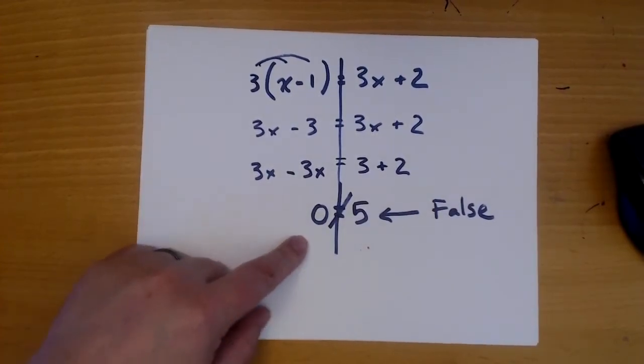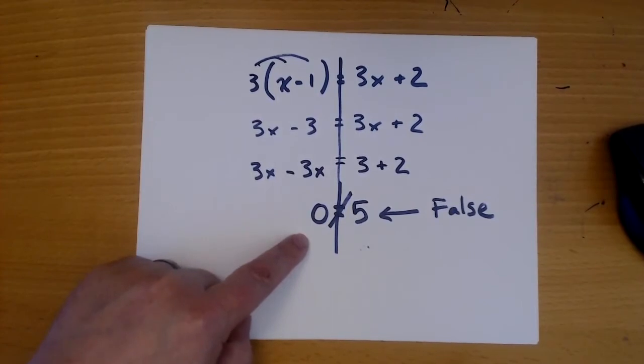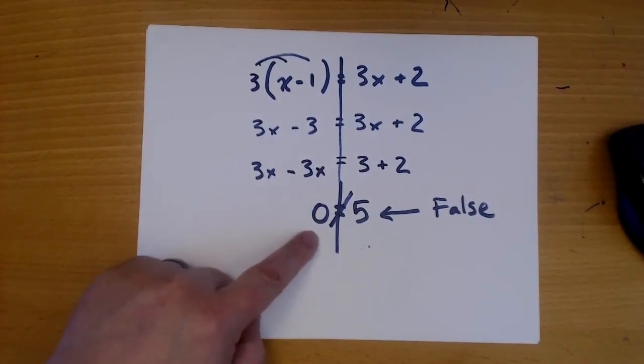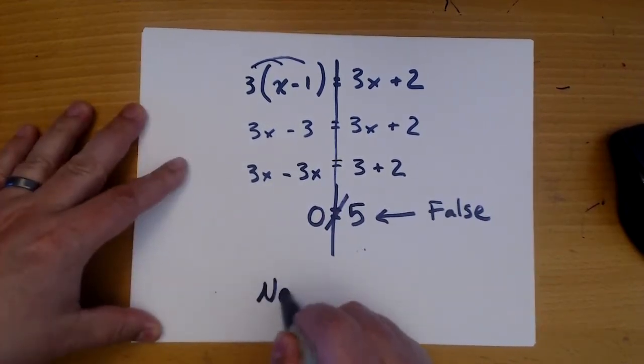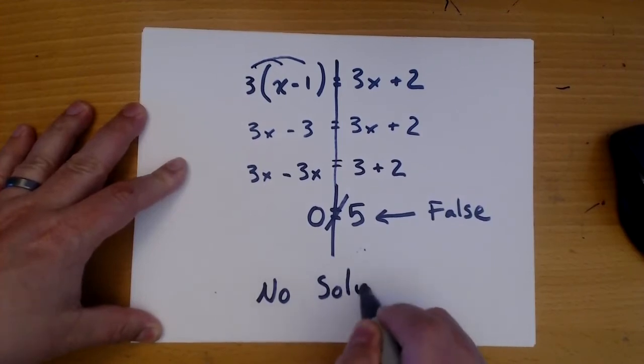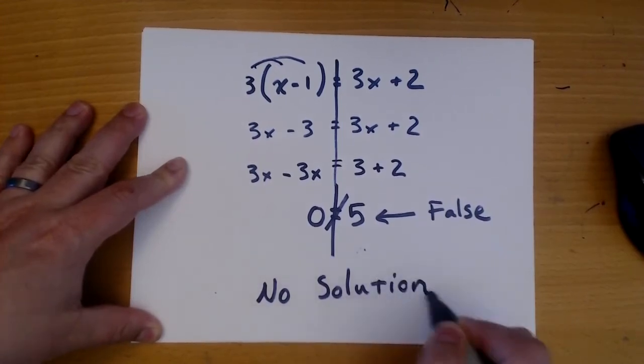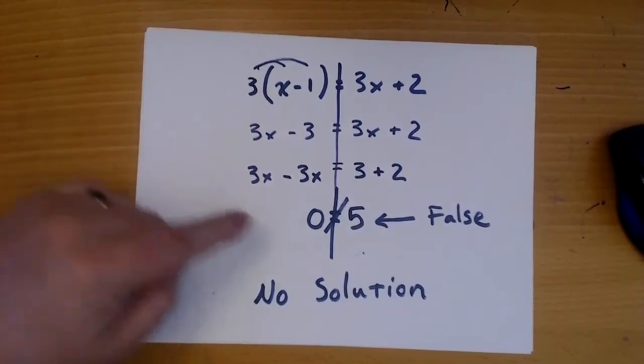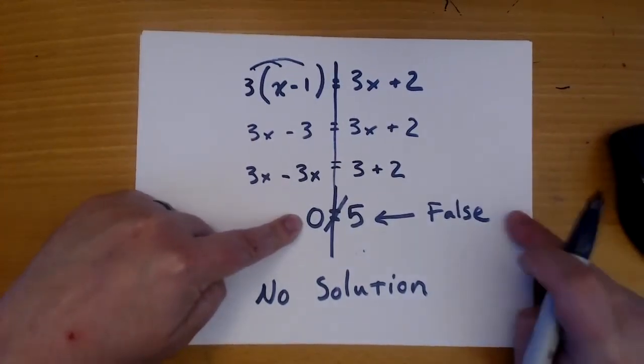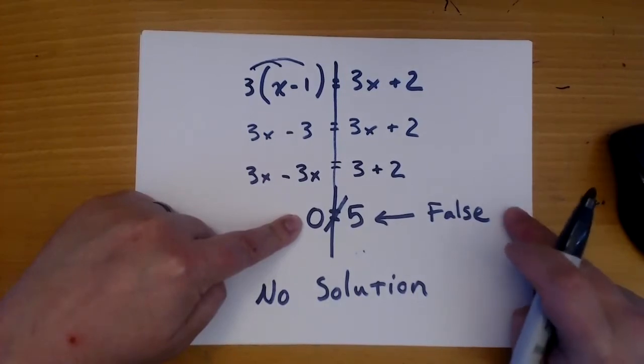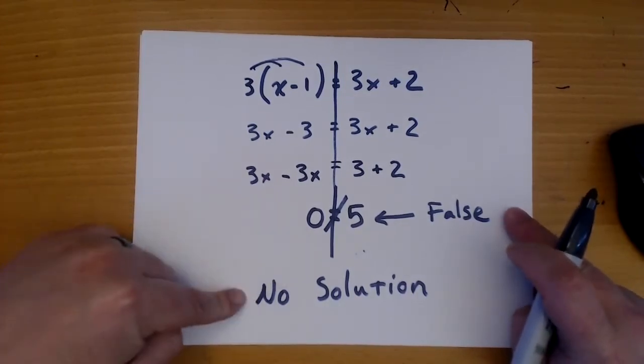This is never true, and it doesn't matter what x was. So this can never be true, and there is no solution. When you come down to something that is a false statement, you have no solution.